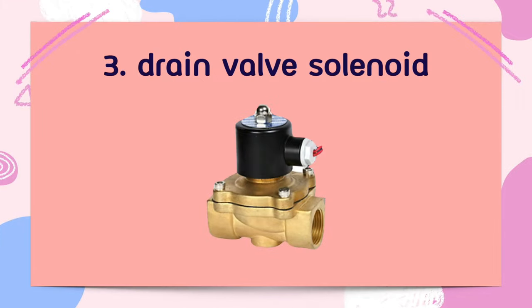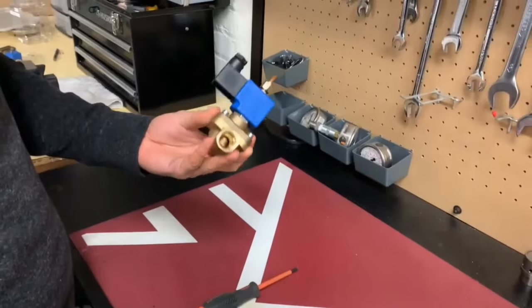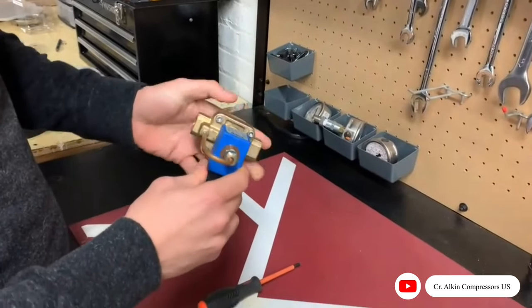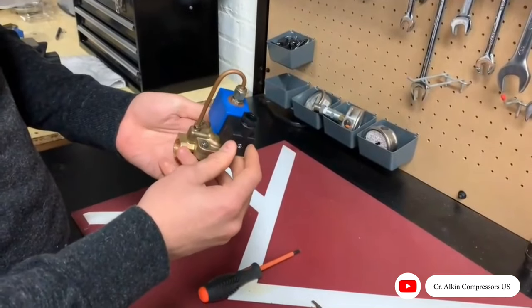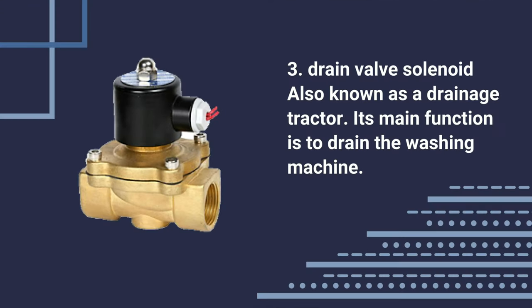Third, Drain Valve Solenoid. Also known as a Drainage Tractor. Its main function is to drain the washing machine.